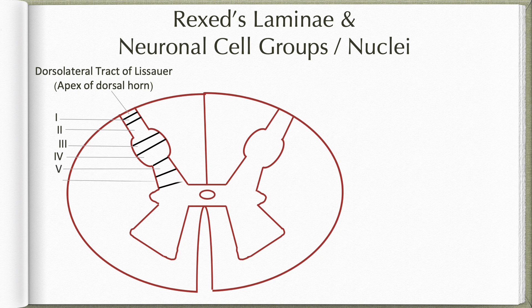Laminae 5 and 6 occupy the neck and base region of the dorsal horn. These receive proprioceptive afferents through the dorsal roots. They also receive collateral branches from the corticospinal projections. Based upon their connections they seem to be involved in regulation of movements.